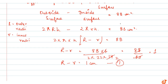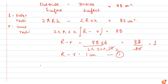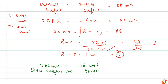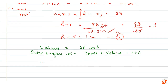The volume of the tube is 176 cm³. The volume equals outer surface volume minus inner surface volume, which is equal to 176 cm³. The volume formula is πR²h minus πr²h.